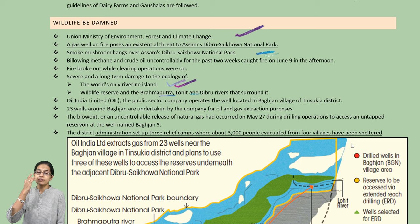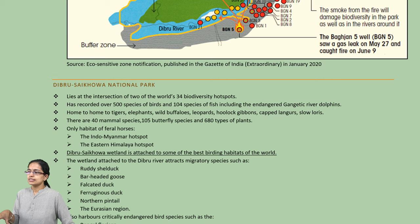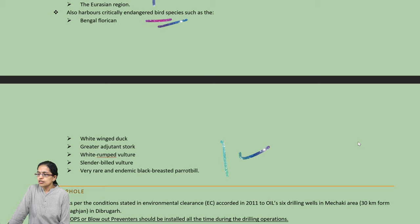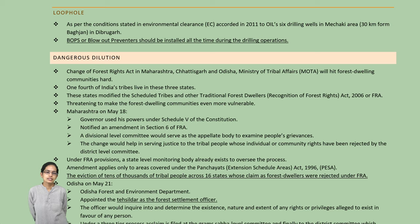The national park lies at the intersection of two of the world's 34 biodiversity hotspots — the Indo-Myanmar and the Eastern Himalayas. There are numerous wetlands associated with the Dibru River, and certain endangered bird species are also located there. Regarding the oil drilling operations in this region, blowout preventers (BOPS) should be installed at the time of drilling operations and could be one of the major solutions.